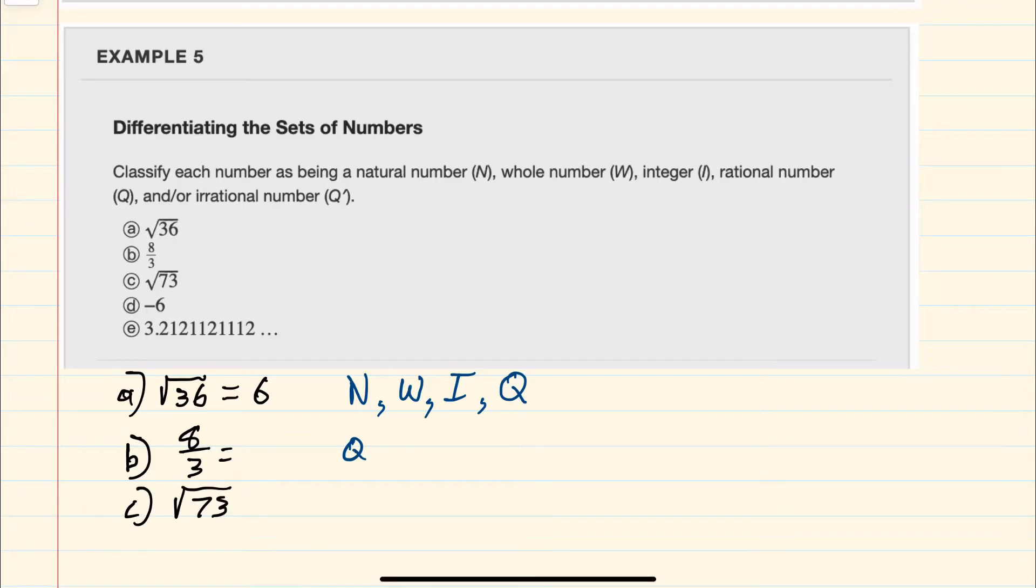C is the square root of 73. The square root of 73 doesn't simplify, so it will not be a natural number, a whole number, or an integer. It's also not going to be rational, because I can't write it as an integer over an integer. This will be irrational, which is our Q prime symbol here.